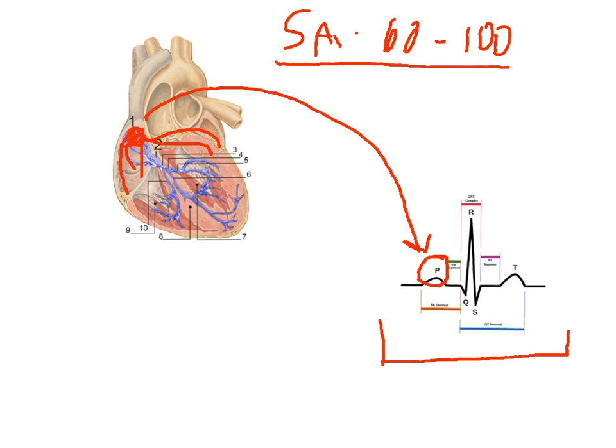Now, once the impulse gets through the atria, it gets stopped right here at this node. And this node that is the dividing line between the atria and the ventricles is known as the AV node or the atrial ventricular node.